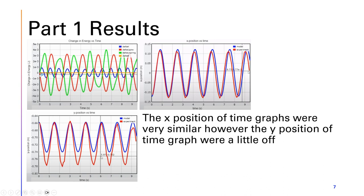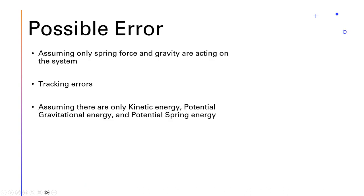The x position graphs were very, very similar. However, the y position graphs were a little off. As you can see, it has a lower minimum in the actual experiment compared to the model. Possible errors could come from only assuming that spring force and gravity are acting upon the system. We also have tracking errors. Another error is assuming that there are only kinetic, potential gravitational, and potential spring energy in the system.